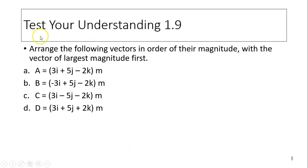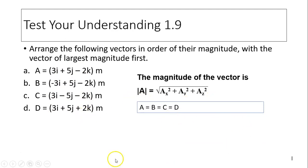Last slide. Test your understanding. Arrange the following vectors in order of their magnitude with the vector of largest magnitude first. So how do we find a magnitude? ax squared plus ay squared plus az squared. Since they have the same components with different signs, the magnitude is the same. So they are all the same.